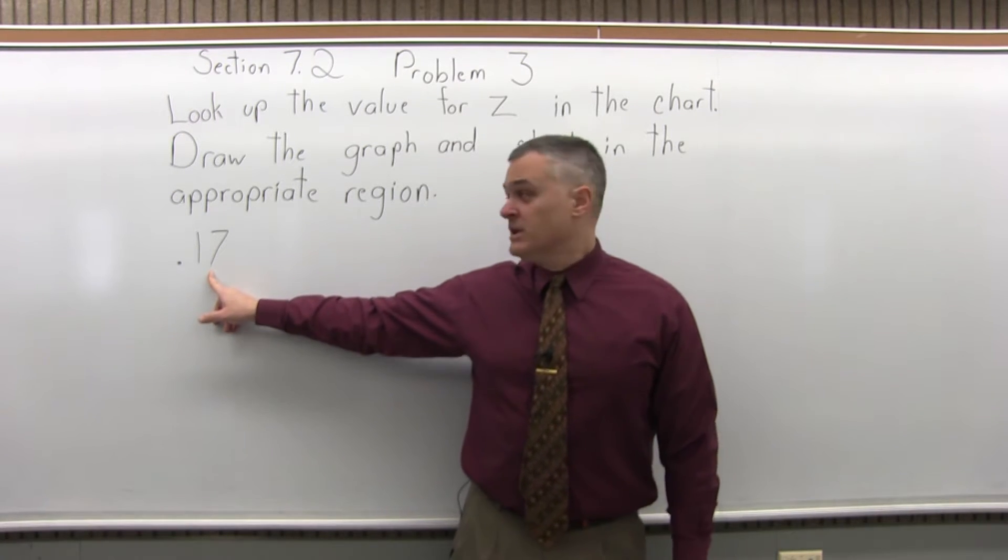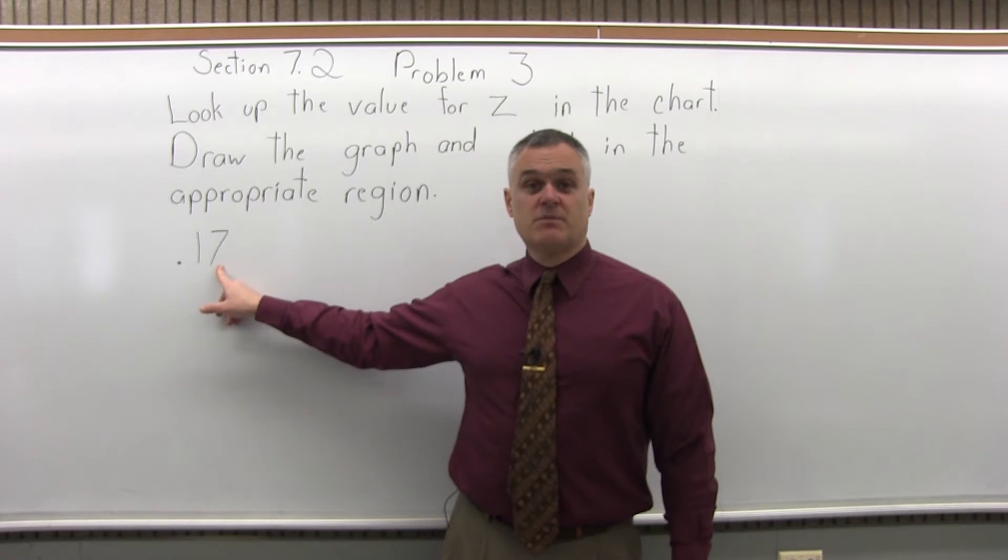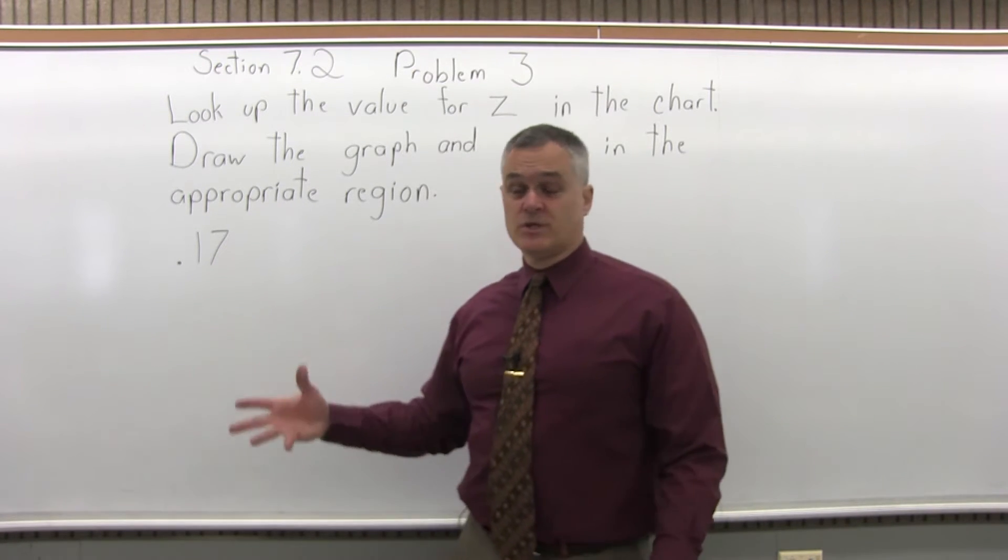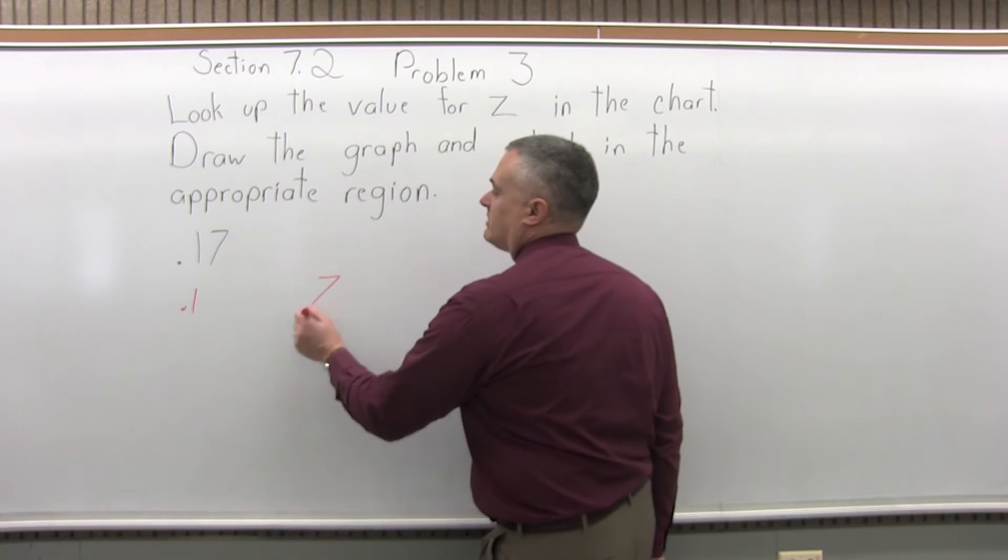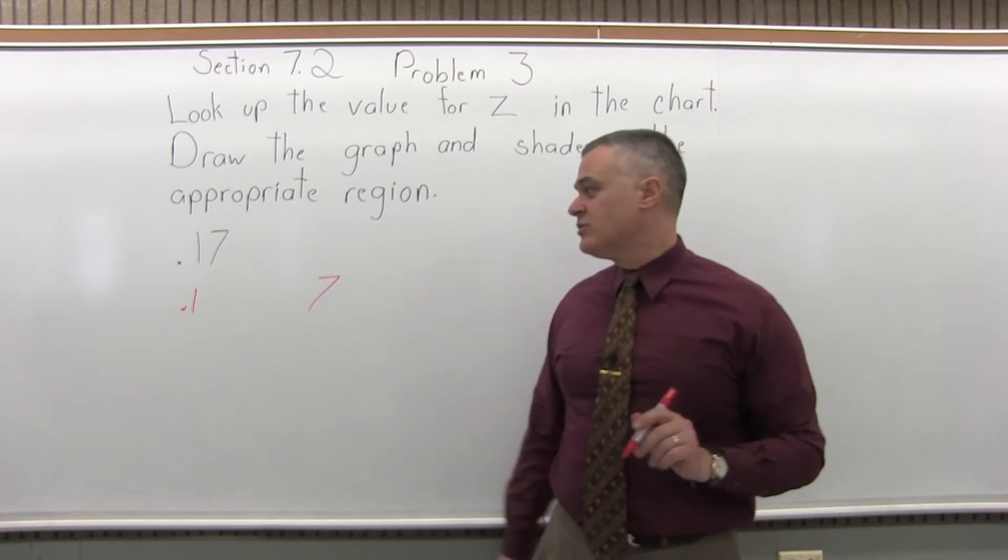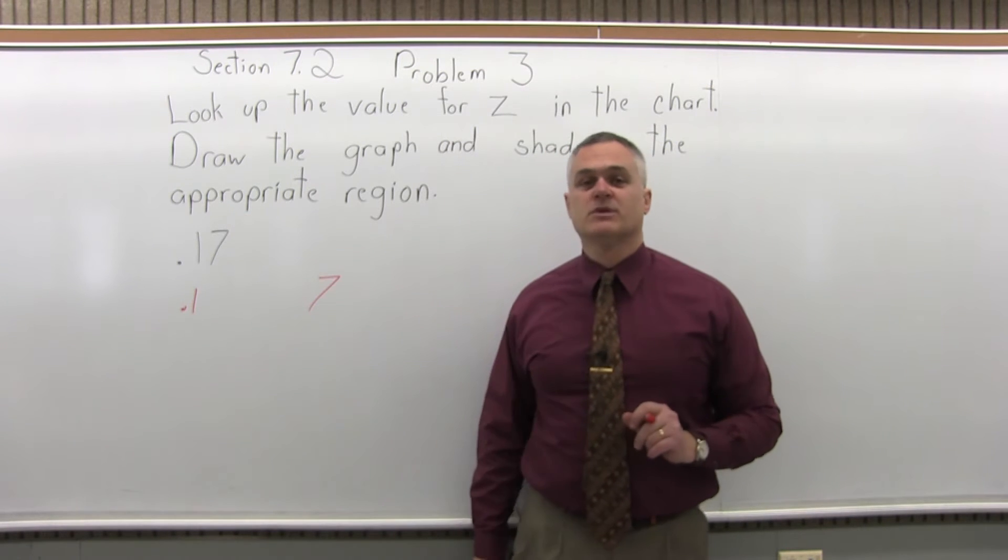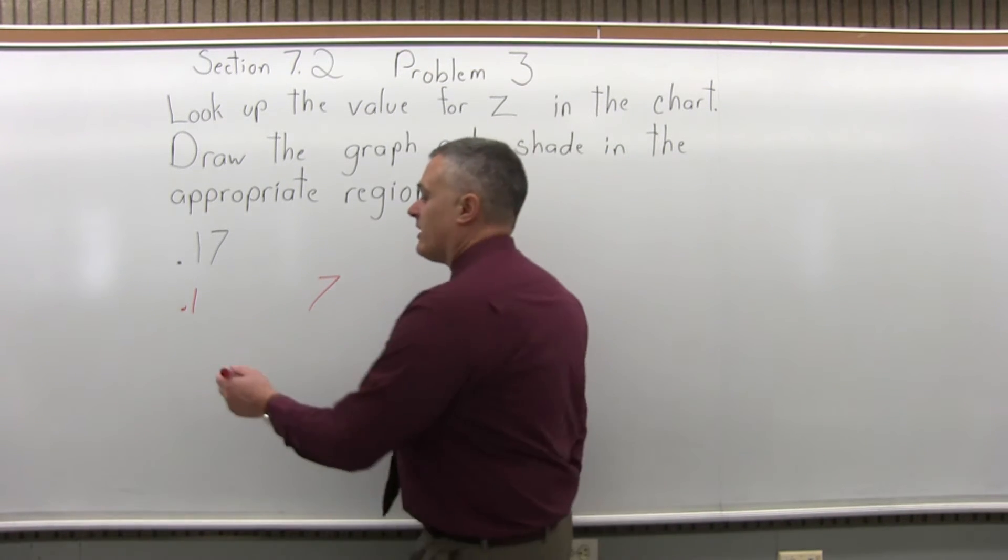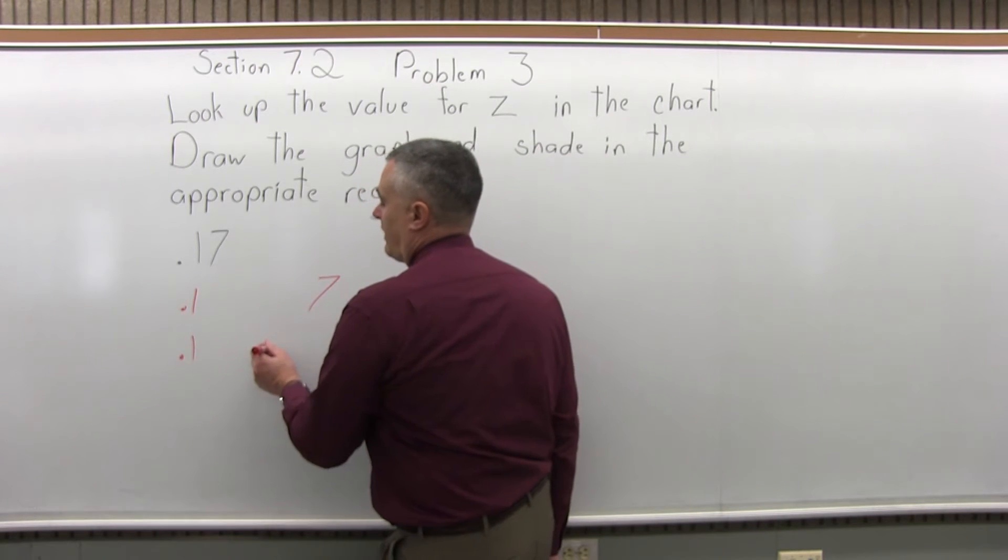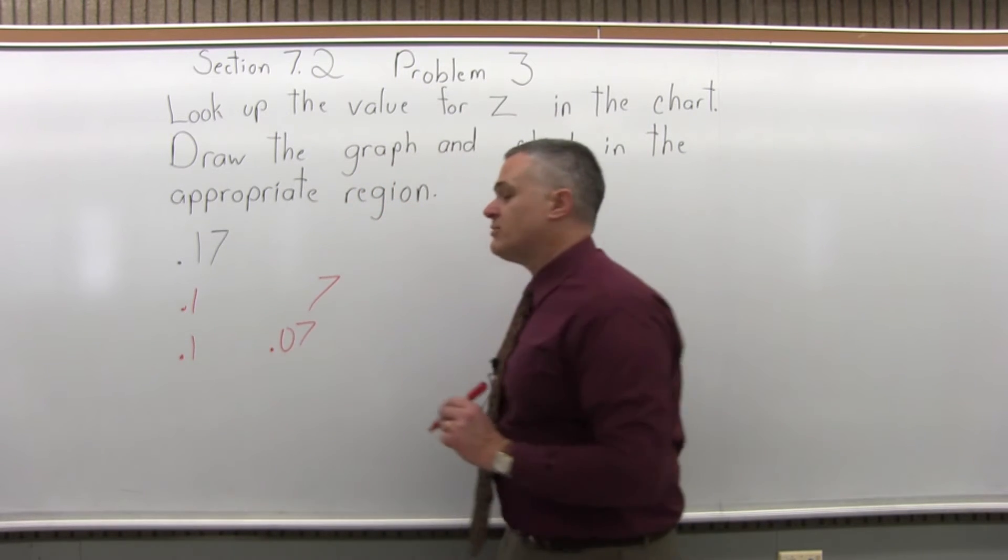Step two, split the number into two parts by pulling off the rightmost digit, which is the seven. So we'll have .1 and the seven comes off to the side. Step three, put a .0 in front of the rightmost digit that you've pulled off. So that seven becomes a .07.